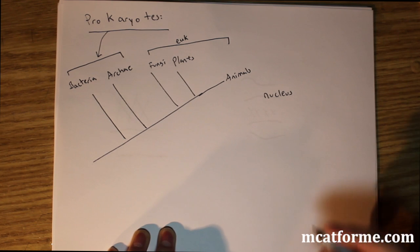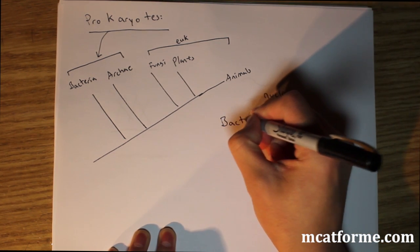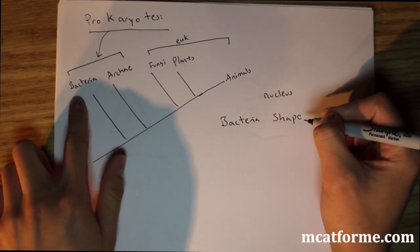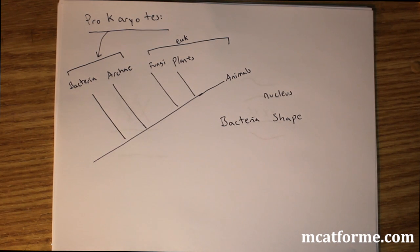So the first thing we're going to be talking about is just typical bacteria, so bacteria shape. That's a pretty important thing. We're going to focus on bacteria as our typical prokaryote.